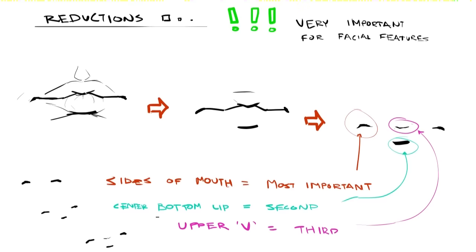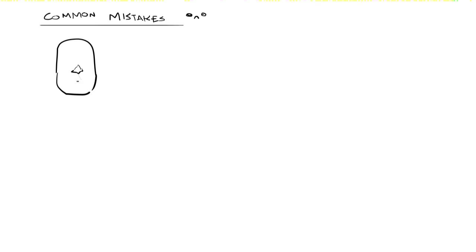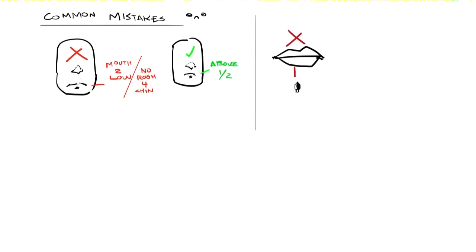These three features are really all you need to showcase lips in most situations, and you can show all types of variations with just these features. One common mistake is making the mouth too low — people from an anime background tend to struggle with showing proper mass in the lower jaw, which results in the mouth often being too low on the face. Just make sure it's above halfway to the bottom of the nose. Always avoid drawing the iconography of lips instead of drawing the form of the mouth, as this makes your drawings look super flat and lifeless.